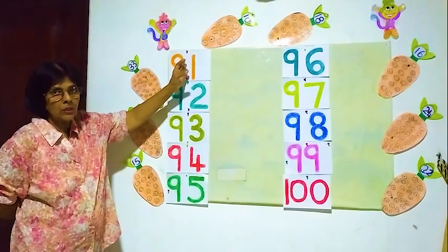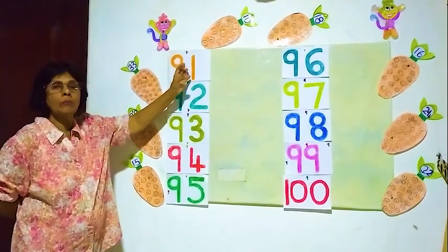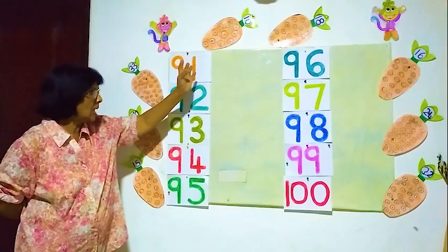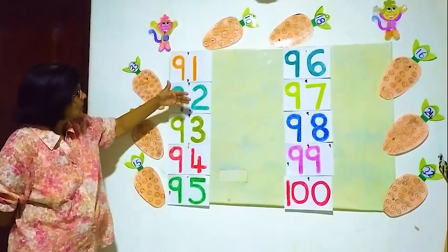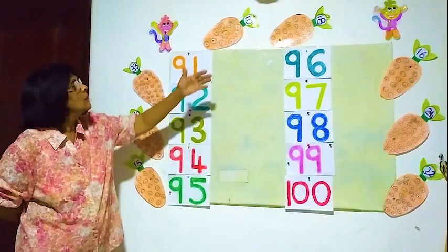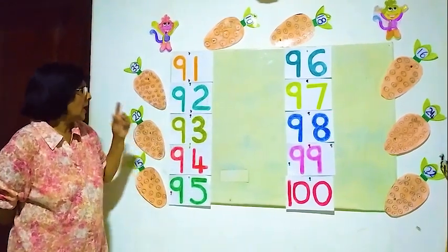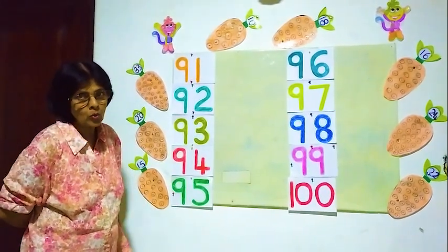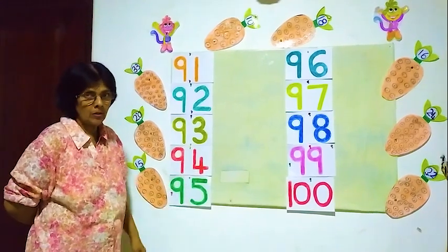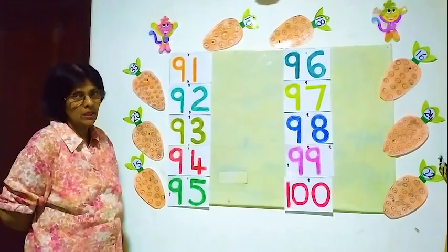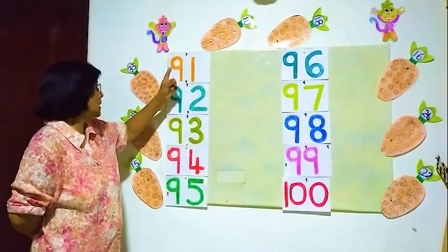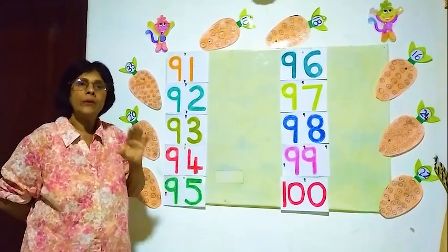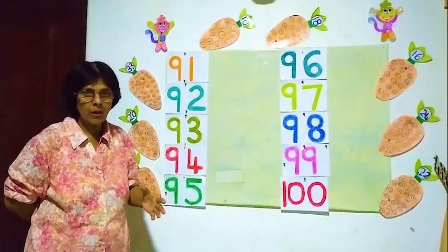Now here, number 91 is here. We have to find number 91, find it, and paste it here. Like that, we have to find all these numbers and fix them on the other side, matching each one to the same number.